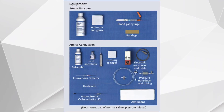Here you can see the arterial cannulation equipment: the armboard, the arterial catheter, the guide wire, the antiseptic, and the local anesthetic. We also have the transducer with the tubings, and the electronic transducer and cable that connects to the monitor.